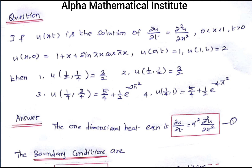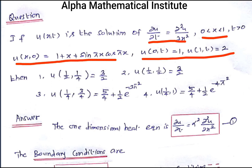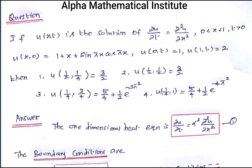Here the one-dimensional heat equation is given: ∂u/∂t = ∂²u/∂x², where x lies between 0 and 1. The initial condition is u(x,0) = 1 + x + sin(πx)cos(πx), and the boundary conditions are u(0,t) = 1, u(1,t) = 2. We need to find u(1/2, 1/4), u(1/2, 1/2), u(1/4, 3/4), and u(1/4, 1).